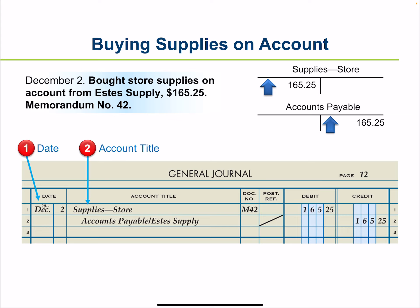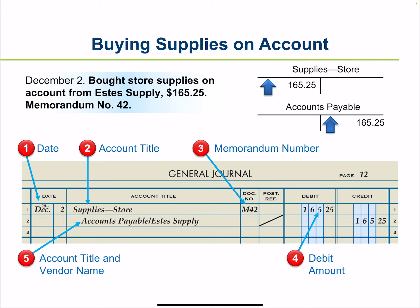The steps are: write the date, write out the account title, the memorandum number, and the debit amount — that takes care of our store supplies. Then for accounts payable, we write the controlling account name and also identify the vendor, separated by a diagonal line — not a hyphen, but a diagonal line. You also draw a diagonal line in your post reference column, because we will be posting not only to our controlling account but also to the vendor's account to keep it up to date.